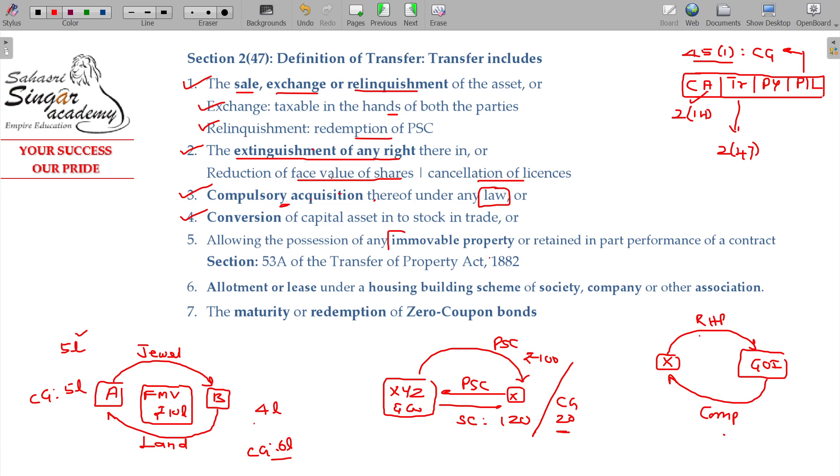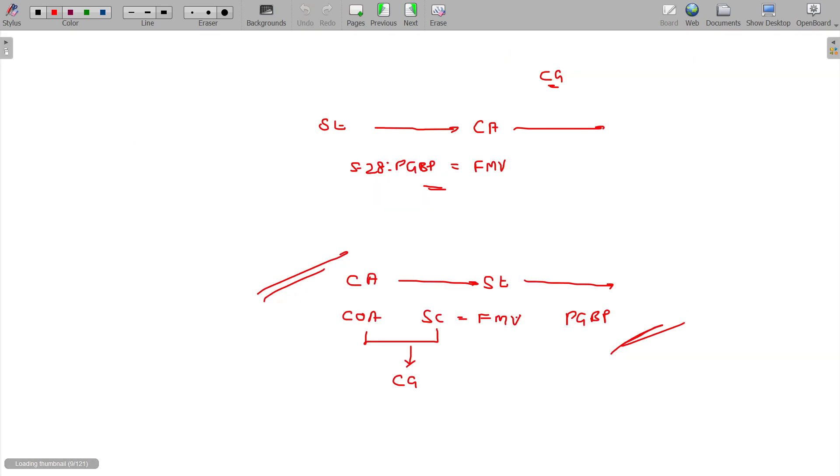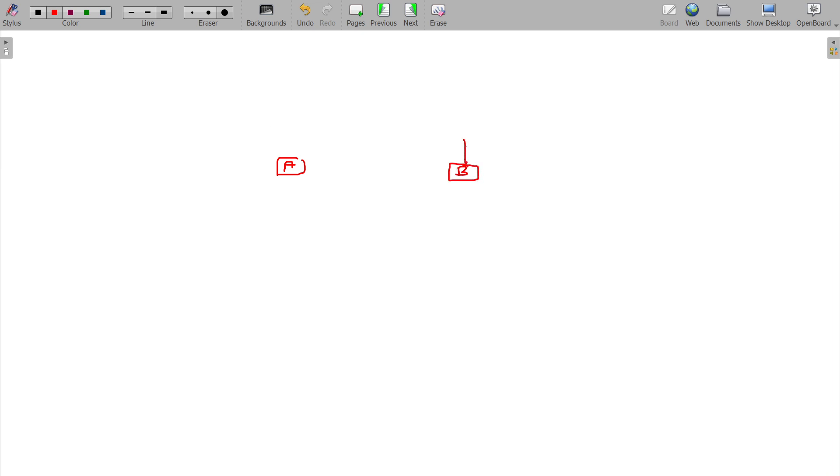In case of immovable property sale, if you confirm possession as per the Transfer of Property Act Section 53A - 53A is not coming under Income Tax Act, it is as per the Transfer of Property Act - this will be considered as your transfer. So in case of Transfer of Property Act, A is the owner of a residential house property, B is the buyer. If B wants to get cash, B will be a buyer of the property.